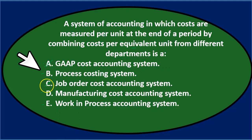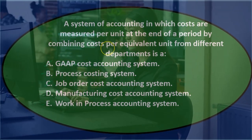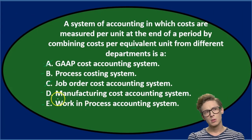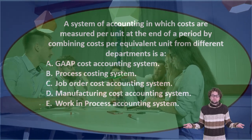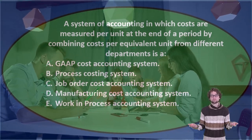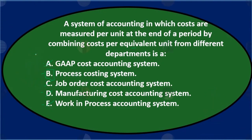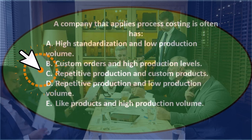Option D, manufacturing cost accounting system, is true in a general sense — we use process cost when manufacturing — but it's less specific than option B, since manufacturing could include either process or job cost. Option E, work in process accounting system, is not the real name; it's called a process cost accounting system, which uses a work in process account. So the best answer is B, process costing system.